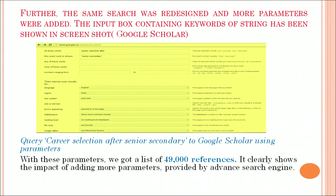Further, the same search was redesigned and more parameters were added. The input box containing keywords of the string is shown in the screenshot — that is Google Scholar. The query is 'career selection for senior secondary' on Google Scholar using parameters. With these parameters, we got a list of 49,000 references. It clearly shows the impact of adding more parameters provided by advanced search engines.